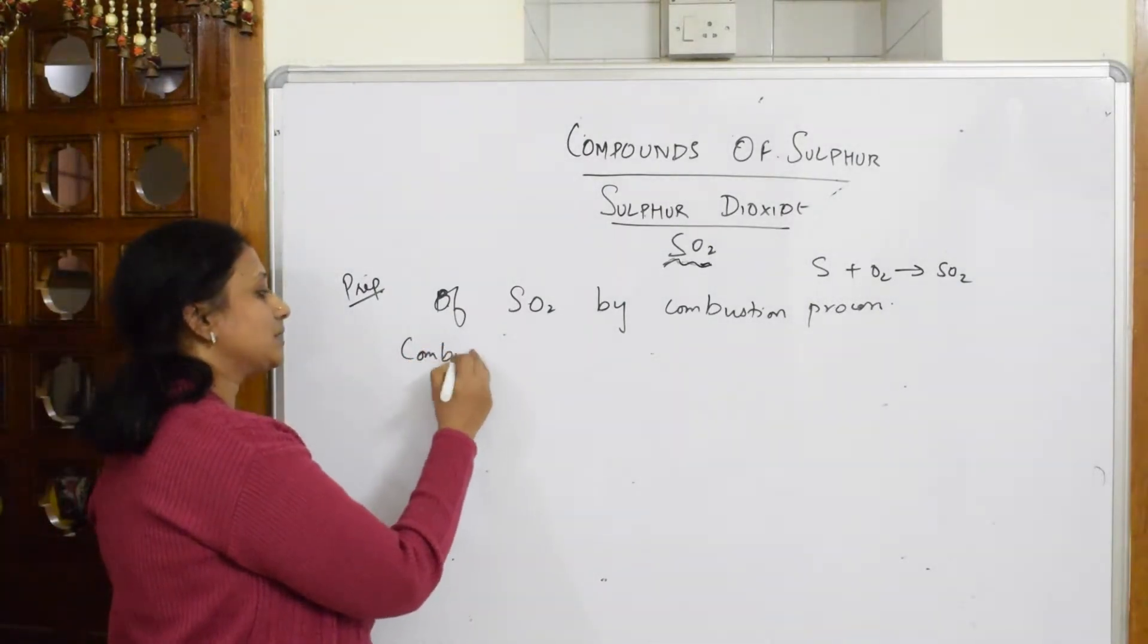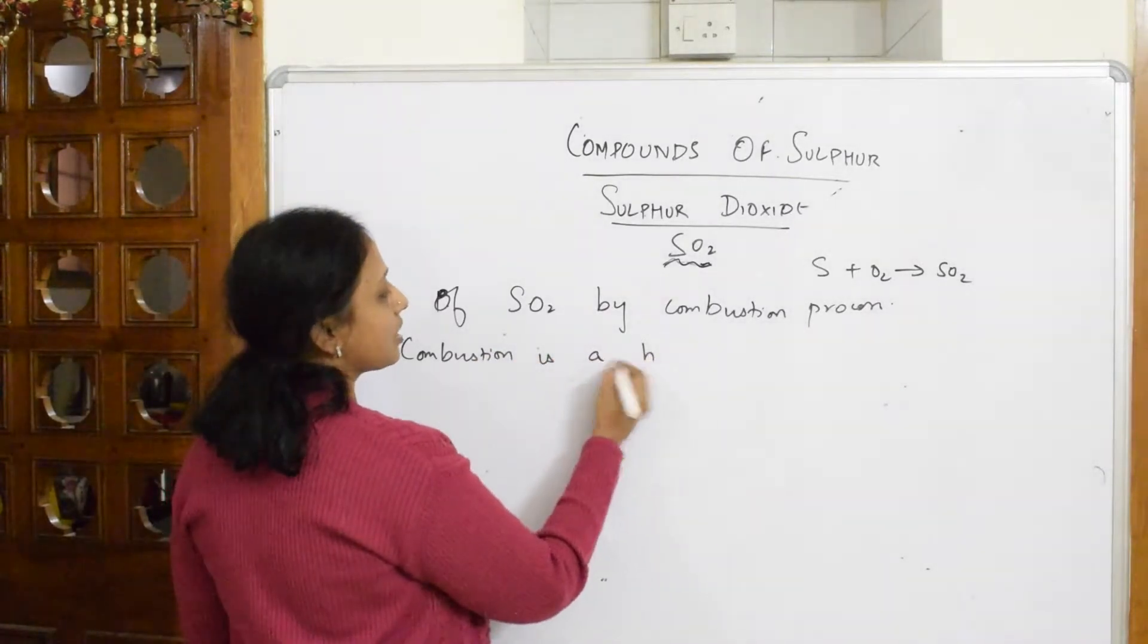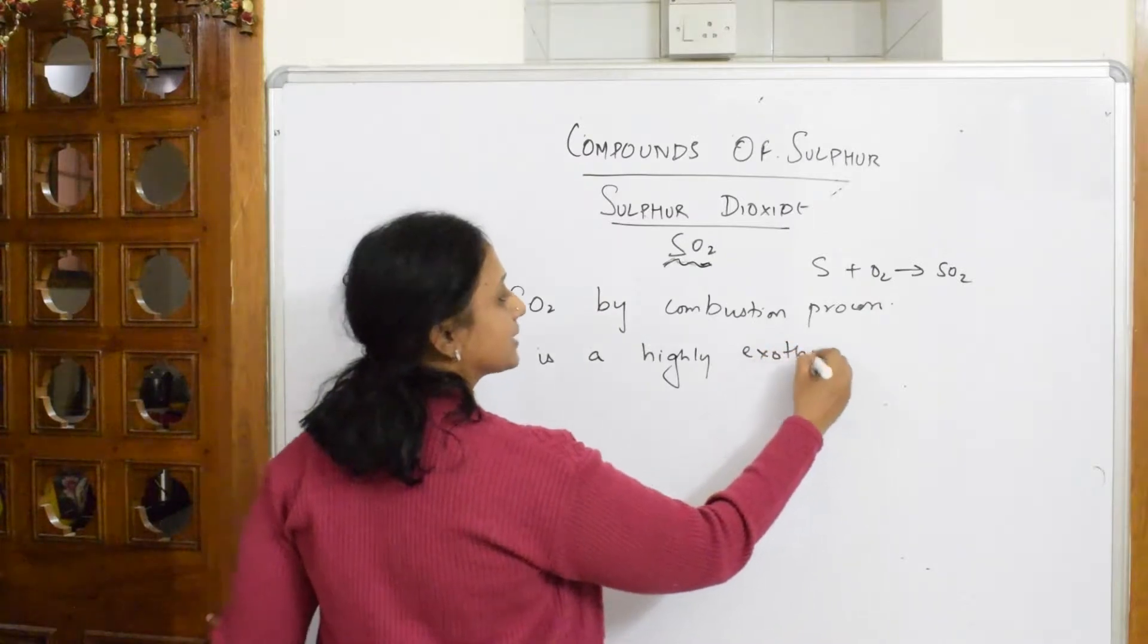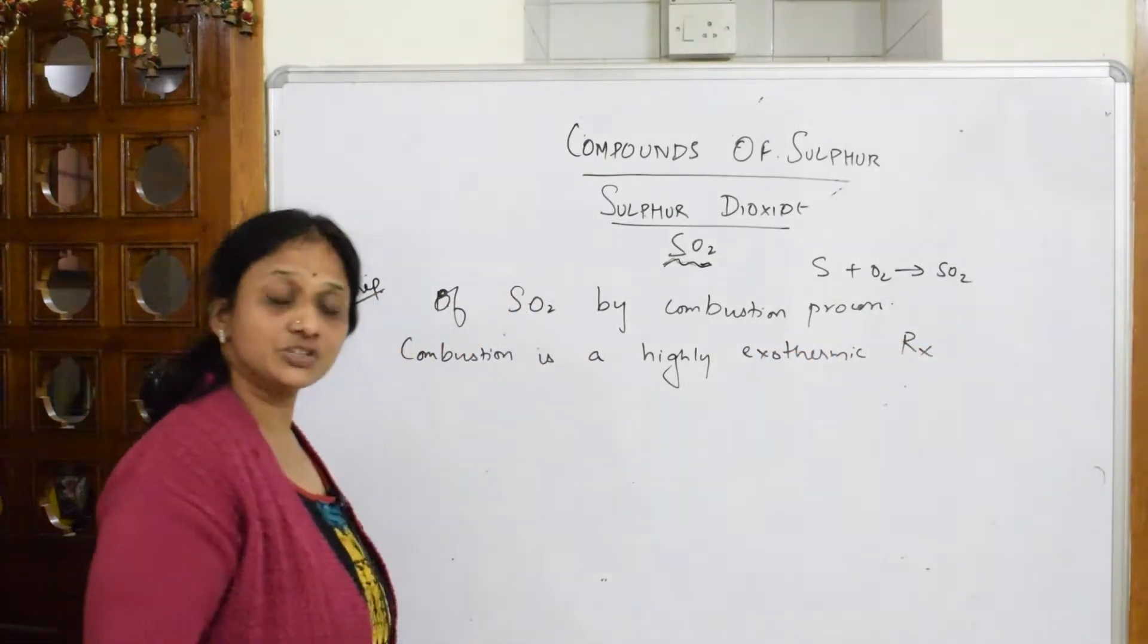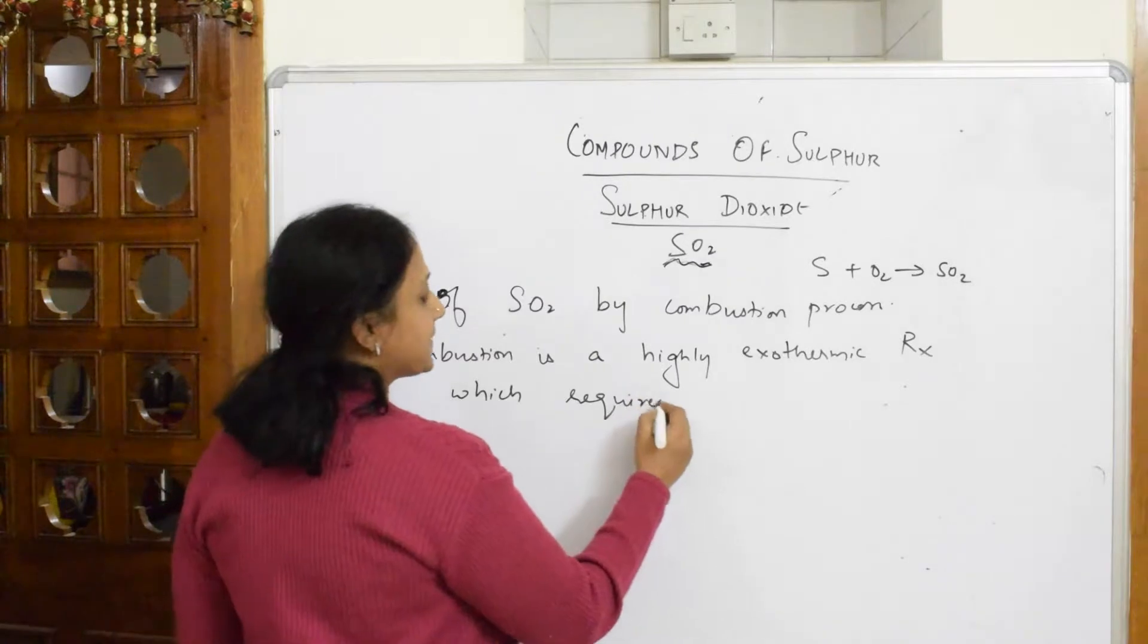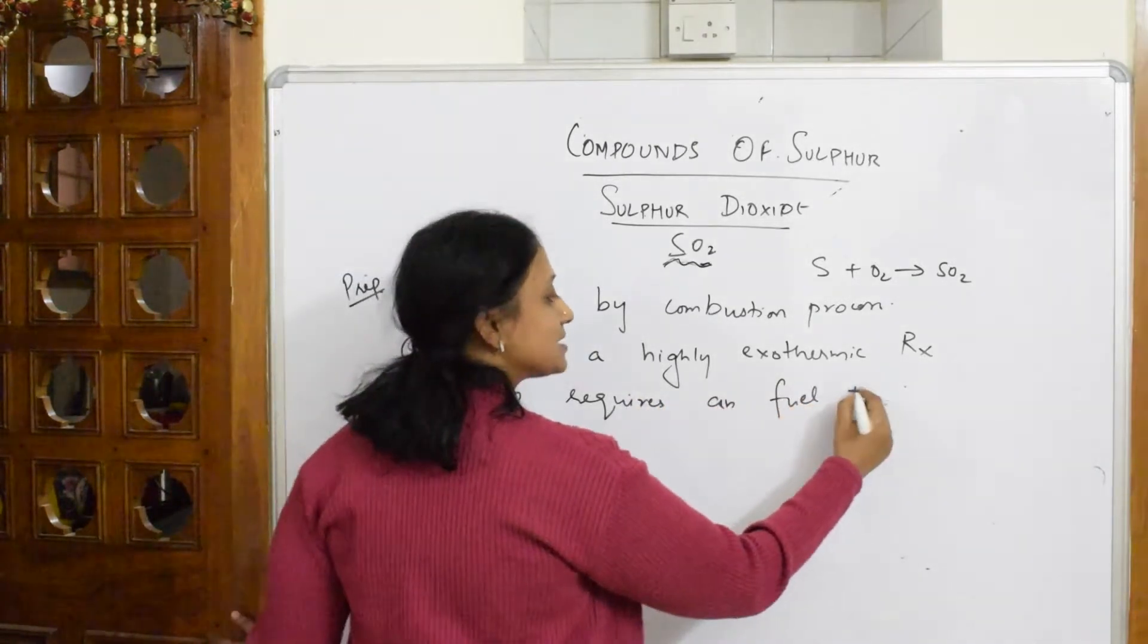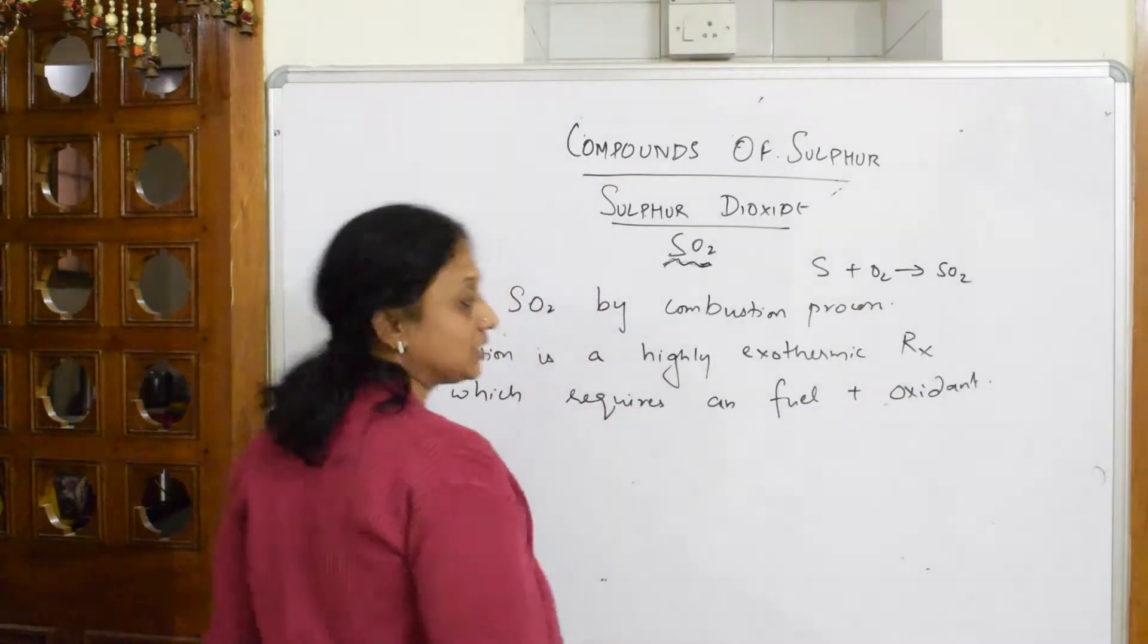So combustion process, if I have to define, let us write that combustion process: combustion is a highly exothermic reaction which requires two important requirements—fuel plus oxidant. This is the concept.